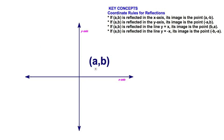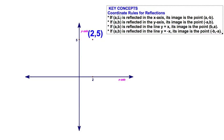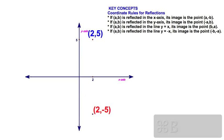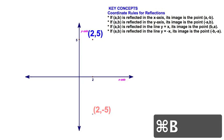Let's look at a more concrete example. Take a point in the first quadrant and apply the first rule: reflecting over the x-axis. Its image is going to be the point with the y-coordinate negated. So the point (2, 5) will reflect to (2, -5). And there you have it — that's one of our rules.